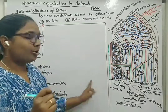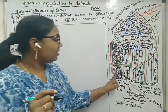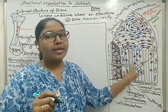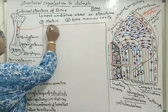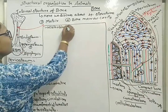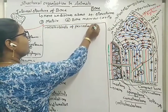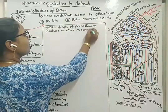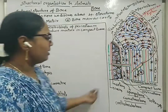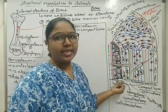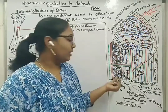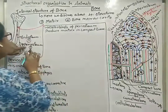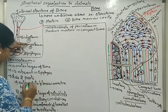Osteoblasts in periosteum and endosteum both secrete matrix. But here the osteoblast is producing osteocytes, while the osteoblast of periosteum is producing matrix. One trabecula has many lamellae; one trabecula is covered by endosteum. The spaces or gaps are occupied by blood capillaries or blood vessels. These are a few points related to periosteum — it has blood capillaries.